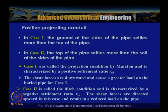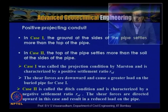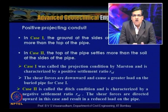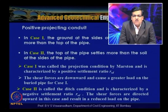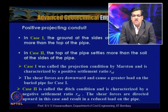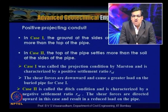For positive projecting conduits, two cases are considered. Case 1: the ground at the sides of the pipe settles more than the top of the pipe — this is for a rigid pipe, and is called the projection condition by Marston, characterized by a positive settlement ratio (Rst > 0).